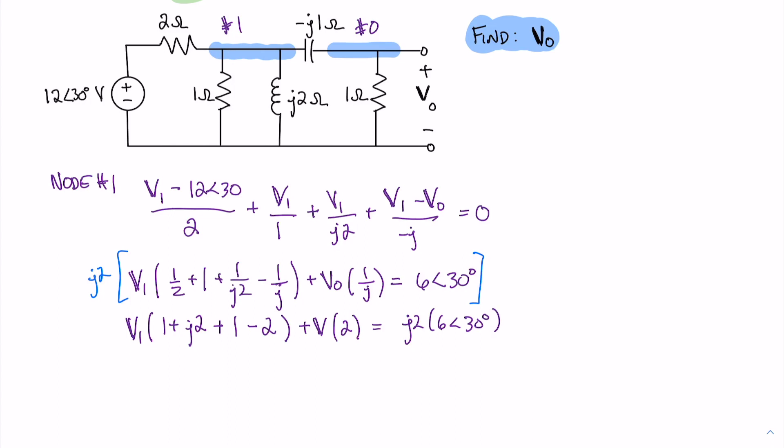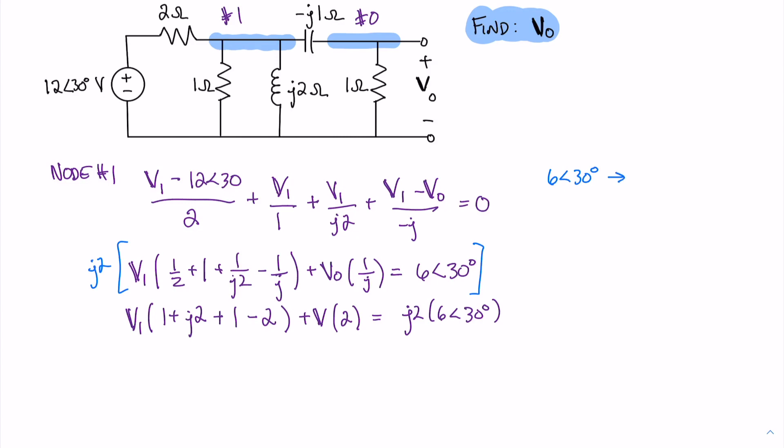Before we proceed further, it would be useful to convert our 6 angle 30 into rectangular form. We can use our sine and cosine expressions for the X and Y, or the real and imaginary parts. The real part X equals 6 cosine 30, which equals 5.196. The imaginary part Y equals 6 sine 30, which equals 3. So simplifying all terms, we get V1 times (minus 1 plus J3) plus Vout times 2 equals minus 6 plus J10.39.